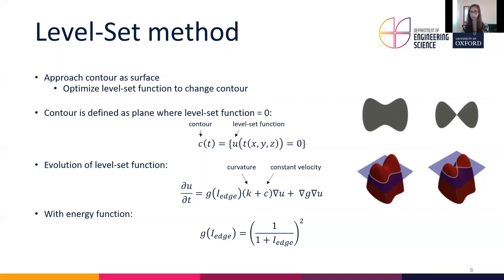We have two parameters: K, which controls the curvature of the contour — so the smoothness — and C, which is the constant velocity that ensures the contour doesn't get stuck in local minima of the image. Our energy function incorporates direct edge information, so the energy function consists of edge features from the image.